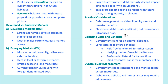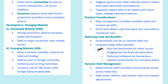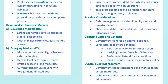Short-term debt — think treasury bills — provides high liquidity but comes with higher rollover risk. Long-term debt — think 30-year treasury bonds — provides stability and serves as benchmarks for other debt instruments, making them great for hedging interest rate risks and providing collateral in financial markets. The U.S. government uses a mix of short-term T-bills for immediate cash needs and long-term T-bonds to lock in low borrowing costs over a longer period. This mix helps balance liquidity and stability.